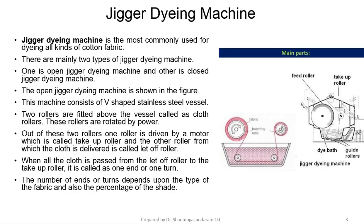Jigger Dyeing Machine is the most commonly used for dyeing all kinds of cotton fabrics. There are mainly two types of Jigger Dyeing Machine: Open Jigger Dyeing Machine and Closed Jigger Dyeing Machine. The Open Jigger Dyeing Machine is shown in the figure.